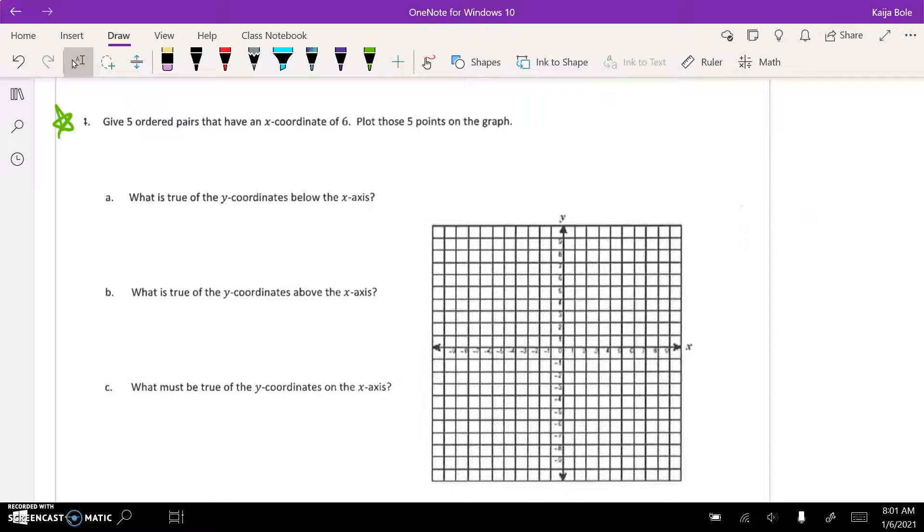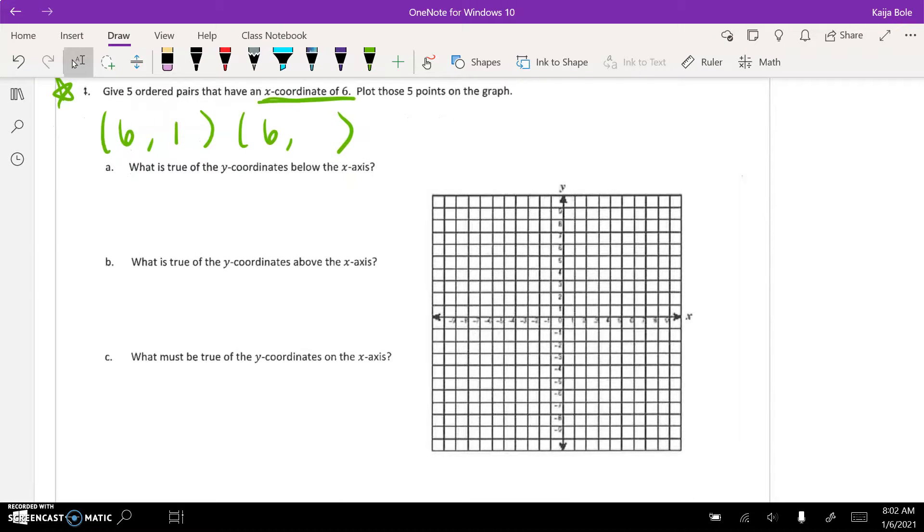And then four here, give five ordered pairs that have an x-coordinate of six. X-coordinate being the first one is six, so like six and then something. You're giving five of them. Any five, keep the numbers under 10. You know, maybe start with like six one, and then just answering the questions based off of what you see.